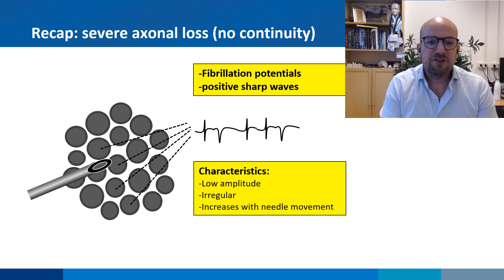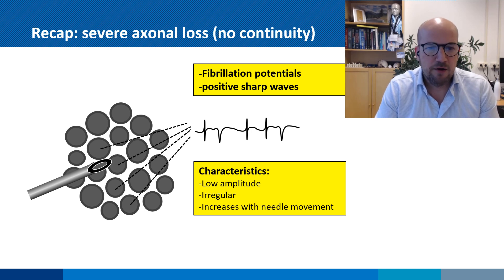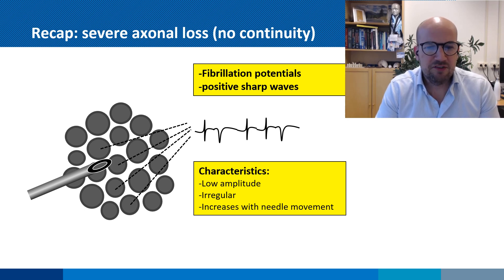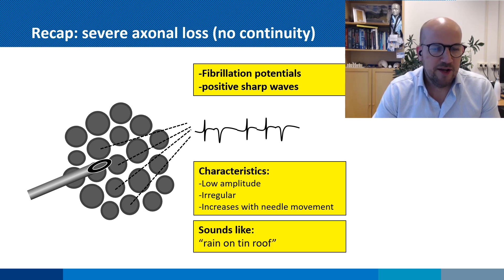The typical characteristics of these potentials are: they have a very low amplitude, they appear irregularly on your screen, and they increase in intensity as you move the needle. It's often compared to the sound of rain on a tin roof.